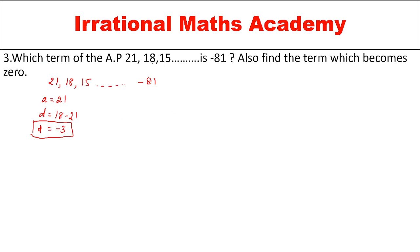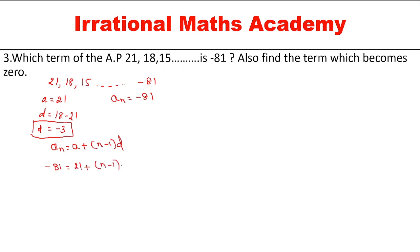Which term of the AP is -81? For that we need to remember this formula: aₙ = a + (n - 1)d. Here aₙ = -81 is given, a = 21 is given, d = -3 is given, and we need to find n. So let me substitute: -81 = 21 + (n - 1) × (-3).